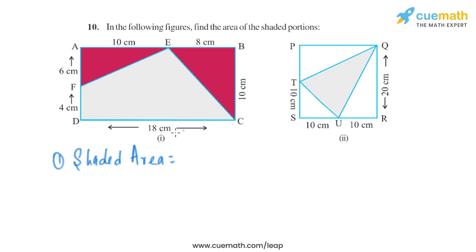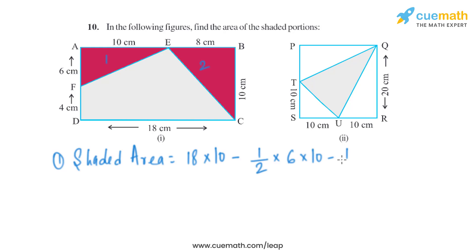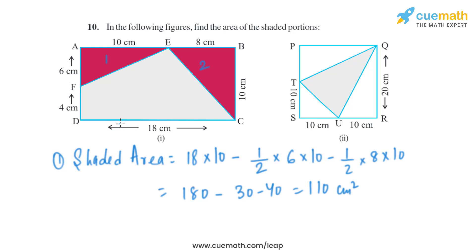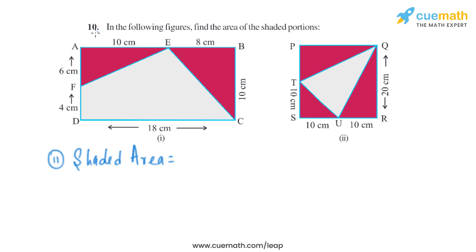In the first part, we find the shaded area by calculating the area of the rectangle — 18 centimeters into 10 centimeters — and then subtracting the areas of the two triangles. So it is 18 into 10, minus half into 6 into 10, minus half into 8 into 10. Solving this: 180 minus 30 minus 40, which equals 110 square centimeters. That is the shaded area of the first part.